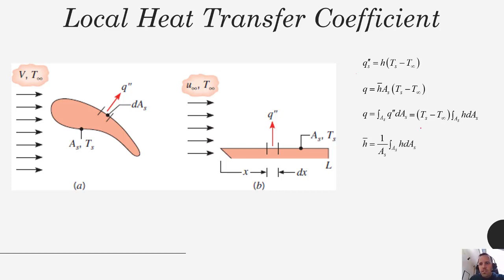So if we did have that constant surface temperature, we could calculate H bar, which is the average heat transfer coefficient using this formula. So we would integrate the local heat transfer coefficient over the entire area, and then divide that by the total area to give us our average.